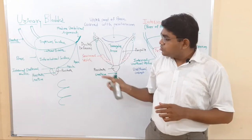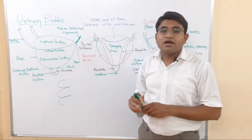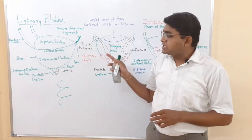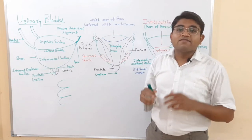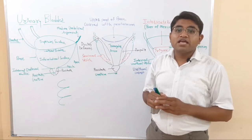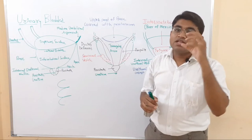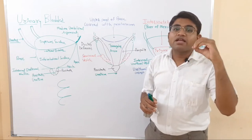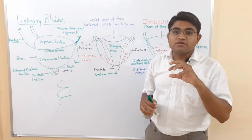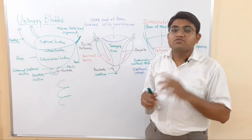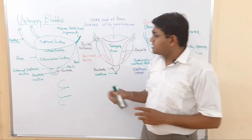This is the special feature of the urinary bladder: the detrusor muscle is arranged in whorls and spirals, so when it contracts it does not cause peristalsis but causes mass contraction.